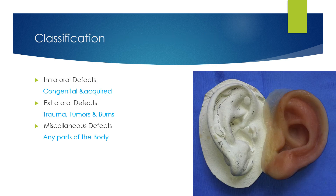Maxillofacial prosthetics can be classified into two main categories. The first is intraoral defects, which can be congenital or acquired. The second is extraoral defects, which can be caused by trauma, tumor, and burns. The third category is miscellaneous defects, which can involve replacement in any part of the body.